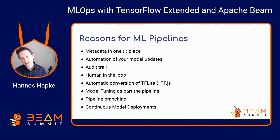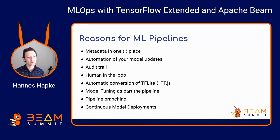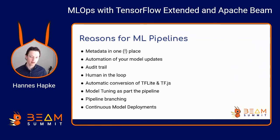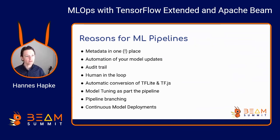A lot of folks ask: right now I retrain models with a notebook, a Python script, or bash scripts — why do we need machine learning pipelines in such an abstracted way through TensorFlow Extended and Apache Beam? Well, as mentioned, you don't have to worry about metadata — it generates a lot of metadata for audit trails and so on. It gives you the optimization to customize components, put humans in the loop, do pipeline branching, generate TF-Lite and TensorFlow JS models simultaneously, and build workflows for continuous model deployment. The implementation is highly abstracted so we can just focus on the components — as we saw, very few lines configure those components and execution happens behind the scenes.